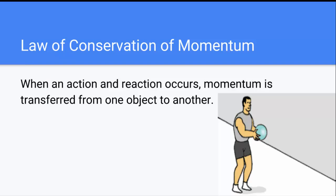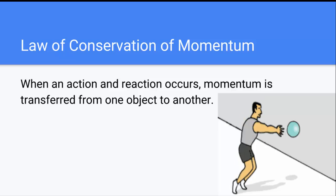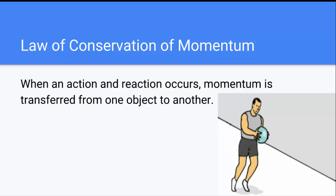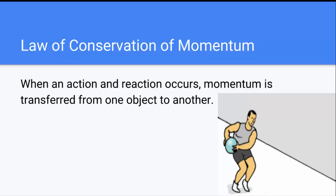The law of conservation of momentum. When an action and reaction occurs, momentum is transferred from one object to another. In the picture, the man throws the ball to the wall with momentum, and the wall pushes back with the same amount of momentum, making the ball go back.